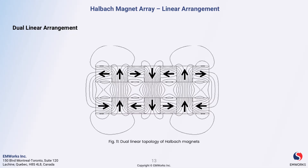This design takes advantage of the unique properties of halbach arrays to enhance magnetic field strength where it's needed most. The interaction between the two arrays allows for a focused magnetic field that can be utilized in various applications such as magnetic actuators or linear motors. By concentrating the magnetic field between the arrays, we can achieve improved performance and efficiency in systems that rely on strong magnetic interactions.